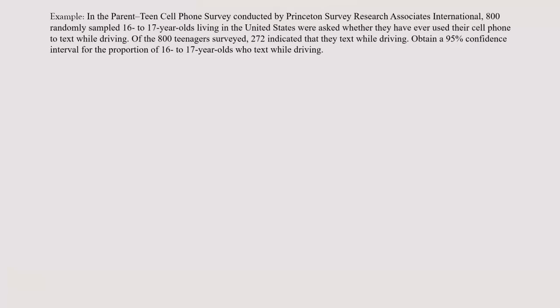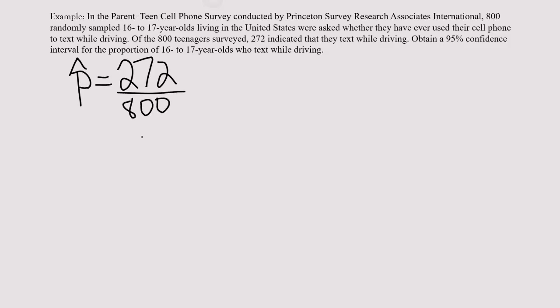First we need to calculate our sample proportion, p-hat. P-hat is equal to the number who said they text while driving — 272 — divided by 800. So that is our sample proportion, and when you divide that out, 272 divided by 800 comes out to be 0.34.